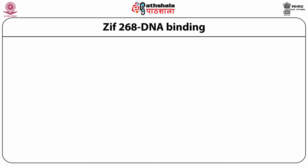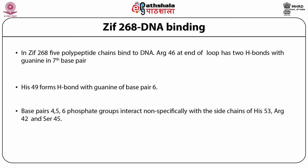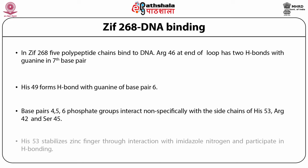In ZIF 268 DNA binding, 5 polypeptide chains bind to DNA. The structure of ZIF 268, a mouse protein with 10 base pairs of DNA, was the first example where the structure of zinc fingers with DNA was available. The 90-residue peptide fragment consists of 3 zinc fingers. The 12 residues between the 2nd cysteine and 1st histidine belonging to the beta shape, loop and alpha helix form the main interaction area with DNA. Arginine 46 at the end of the loop has 2 H-bonds with guanine in the 7th base pair; histidine 49 forms an H-bond with guanine of base pair 6. Base pairs 2, 5 and 6 phosphate groups interact non-specifically with side chains of histidine 53, arginine 42 and serine 45. Histidine 53 stabilizes the zinc finger through interaction with imidazole nitrogen and participates in H-bonding.